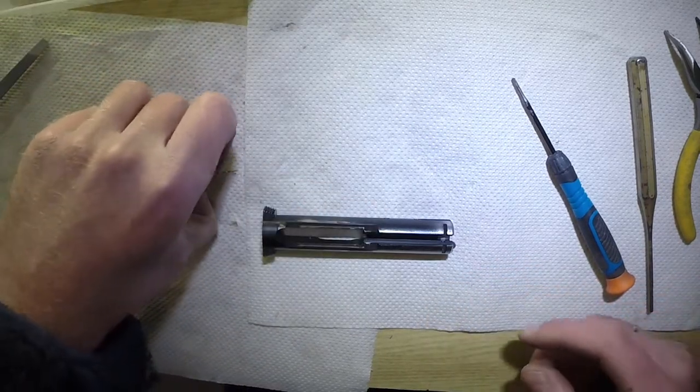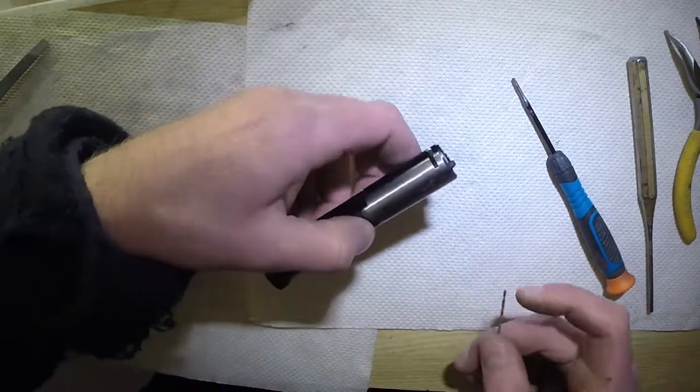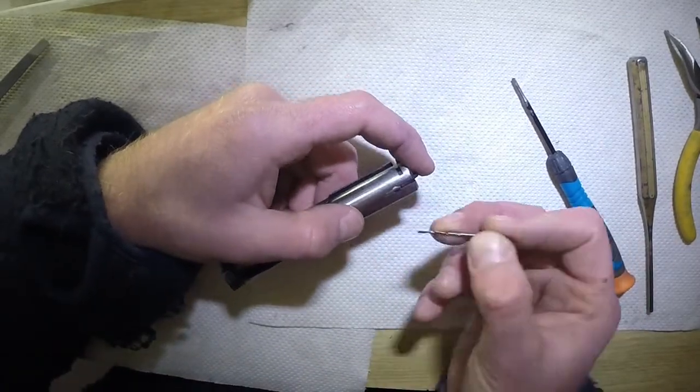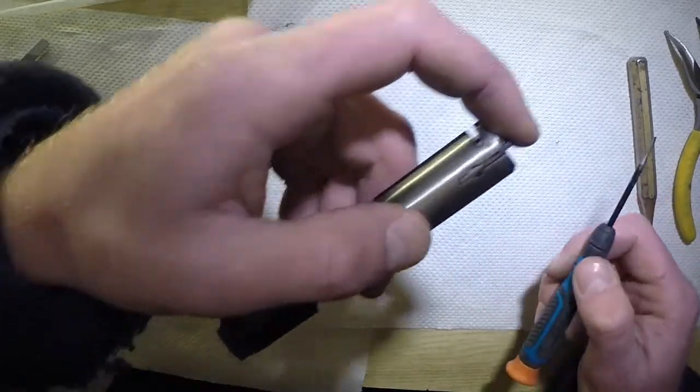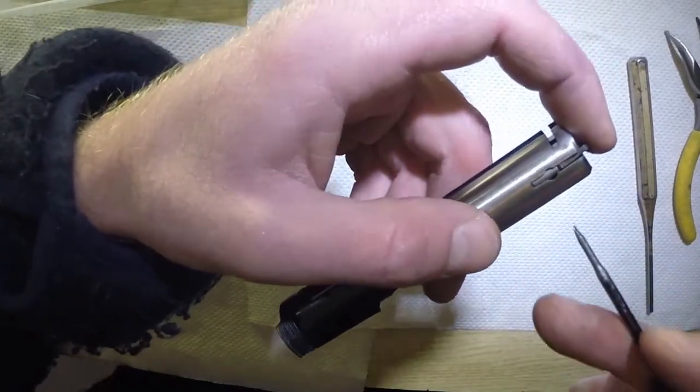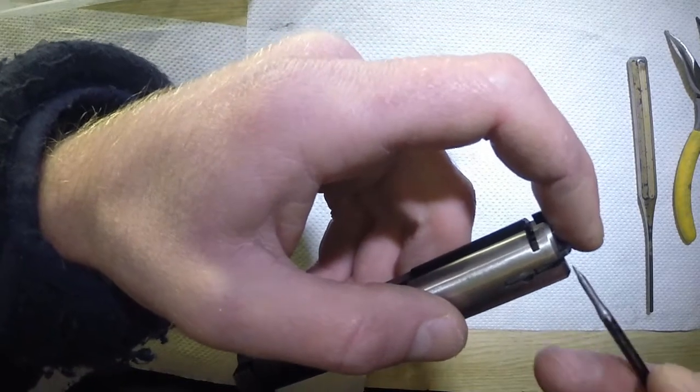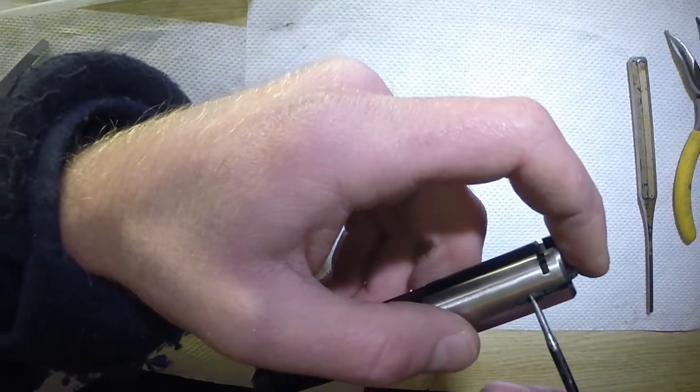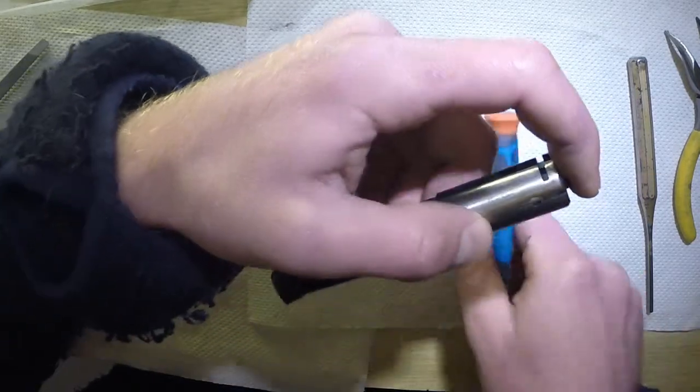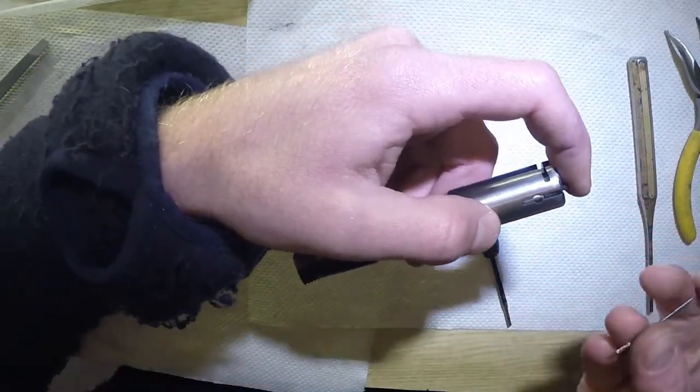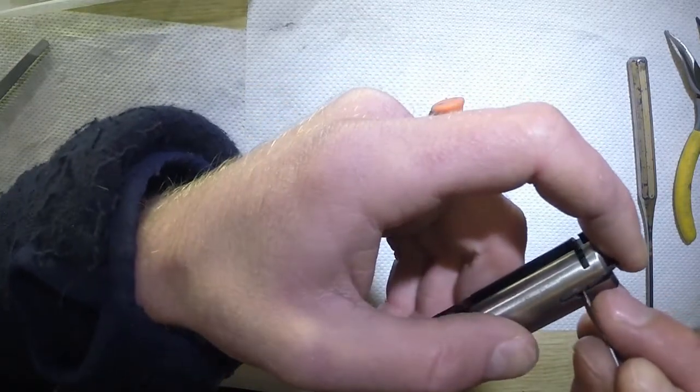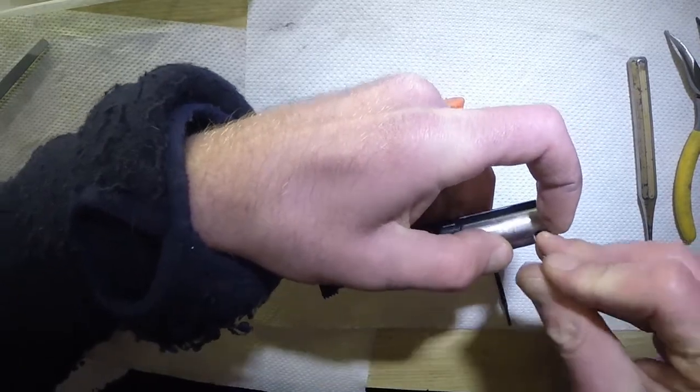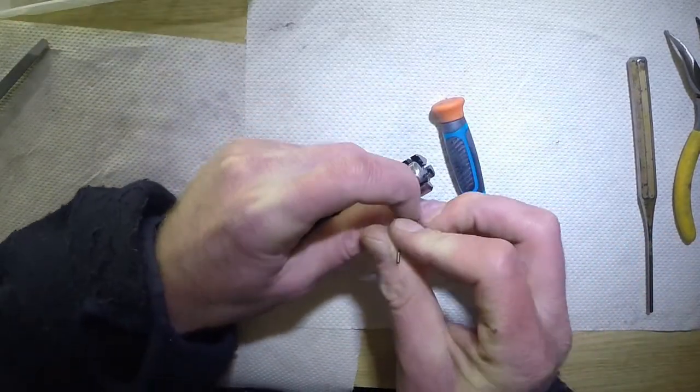Now we're going to take out the extractor. This is a little bit tricky, probably going to take a while. What you need is to get something flat in between the extractor and the extractor plunger. Everything is being held in place by tension, so you need to release the tension by pushing back on the plunger as far as you can get it.